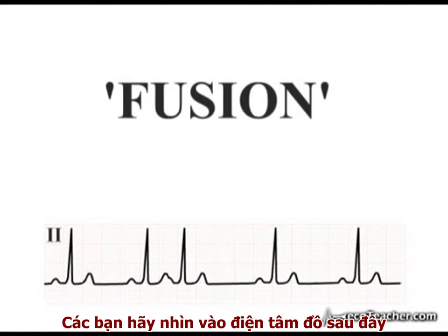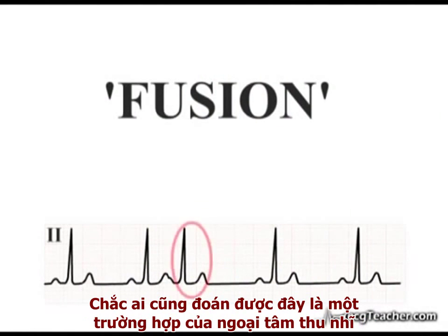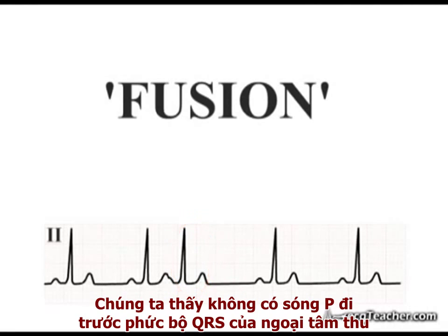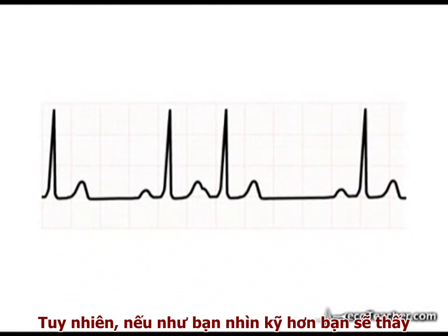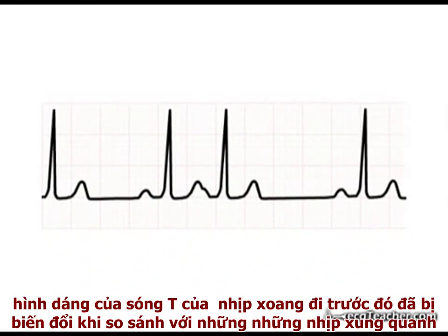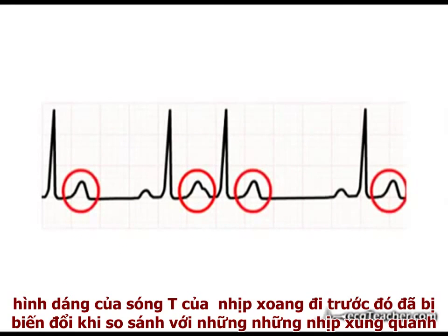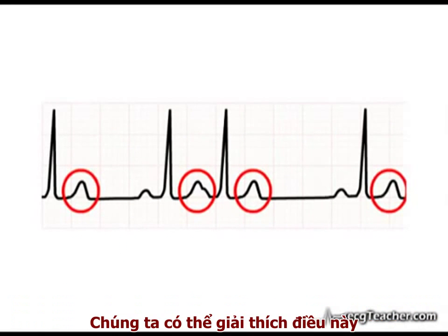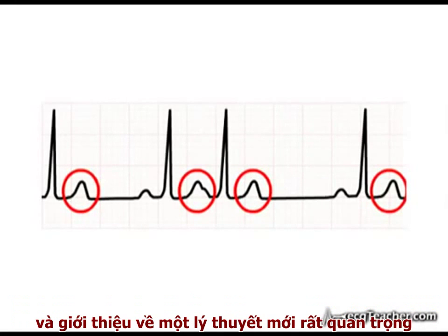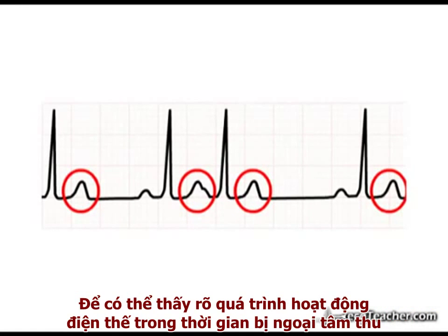Looking at this rhythm strip, we note the presence of a premature atrial contraction. At first glance there does not appear to be any P-wave deflection associated with the ectopic event. However, if you look closely you will see that the morphology of the T-wave associated with the preceding sinus beat is altered compared to those around it. We can explain this and introduce an important concept by watching events in the heart around the time of the ectopic.